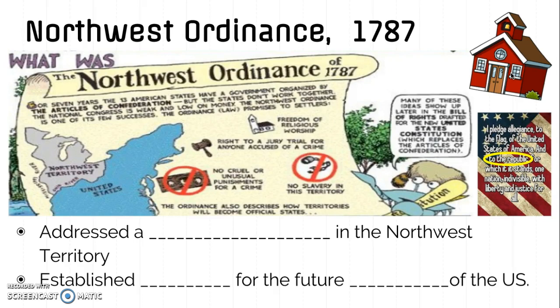Number three: the Northwest Ordinance included many basic rights of citizenship — some of those natural rights we've been discussing previously. We see in the Northwest Ordinance freedom of religious worship, the right to trial by jury, and no cruel or unusual punishment. These are all precursors to the Bill of Rights, which also ensures that we as US citizens are guaranteed all three of these things.